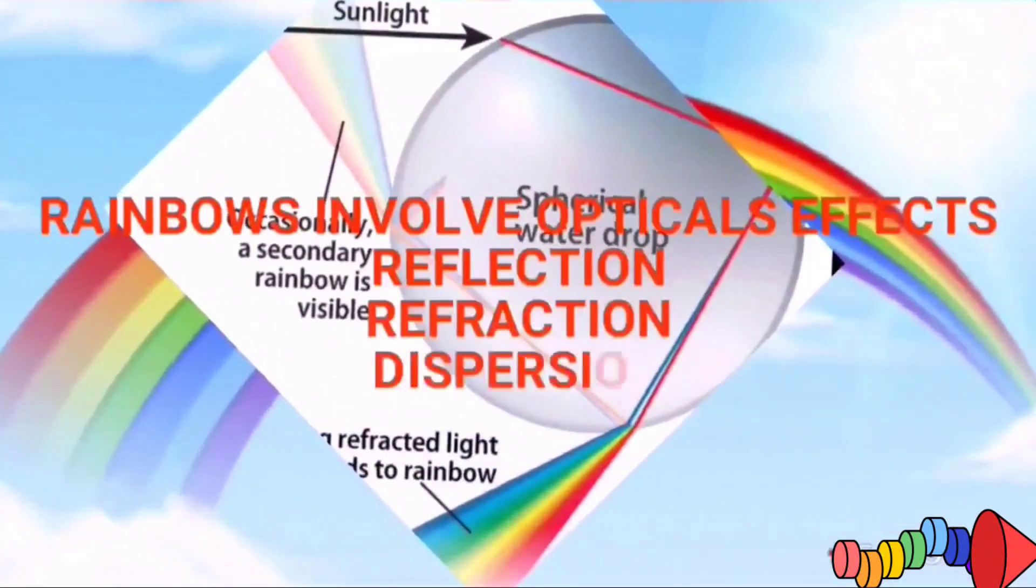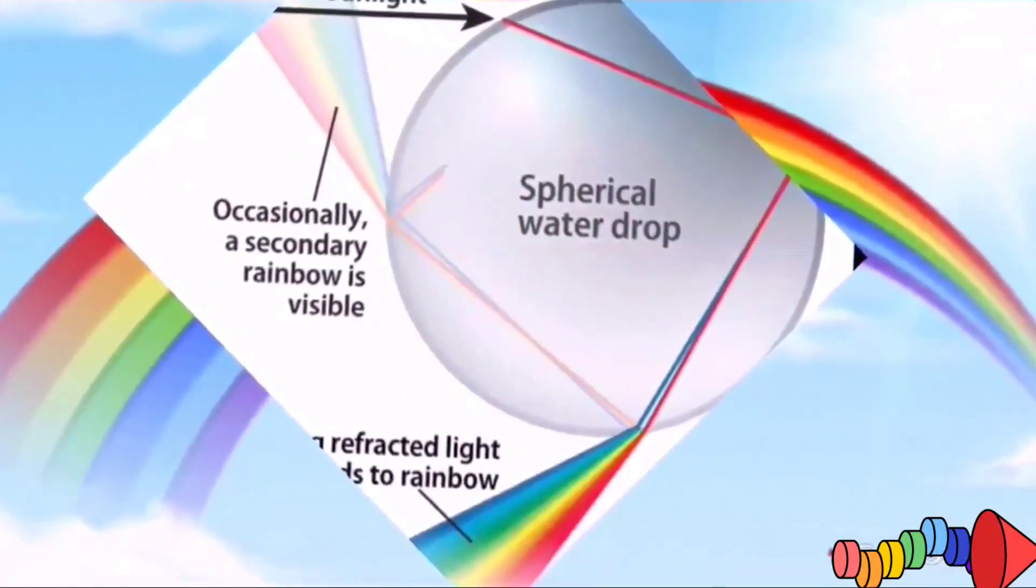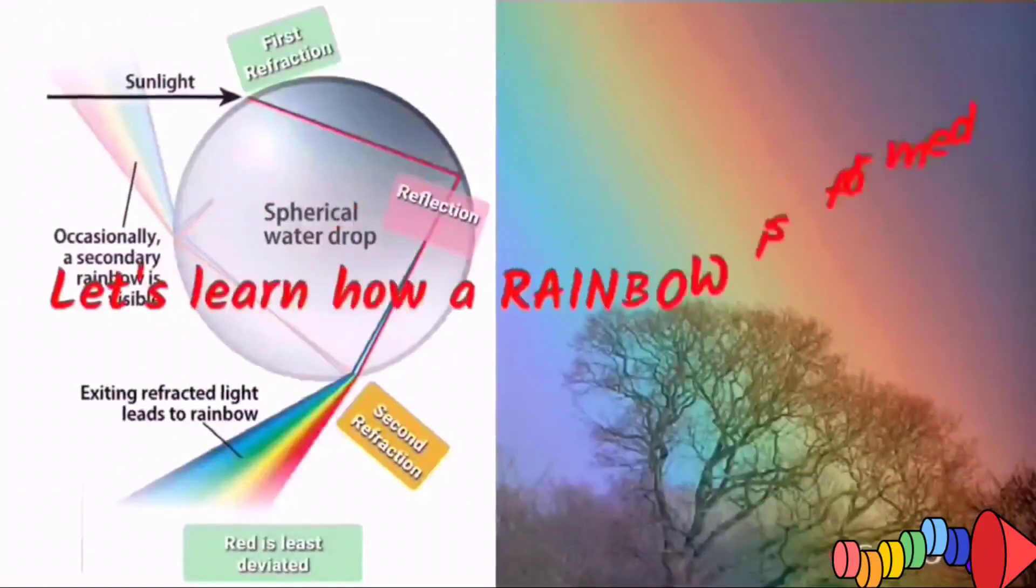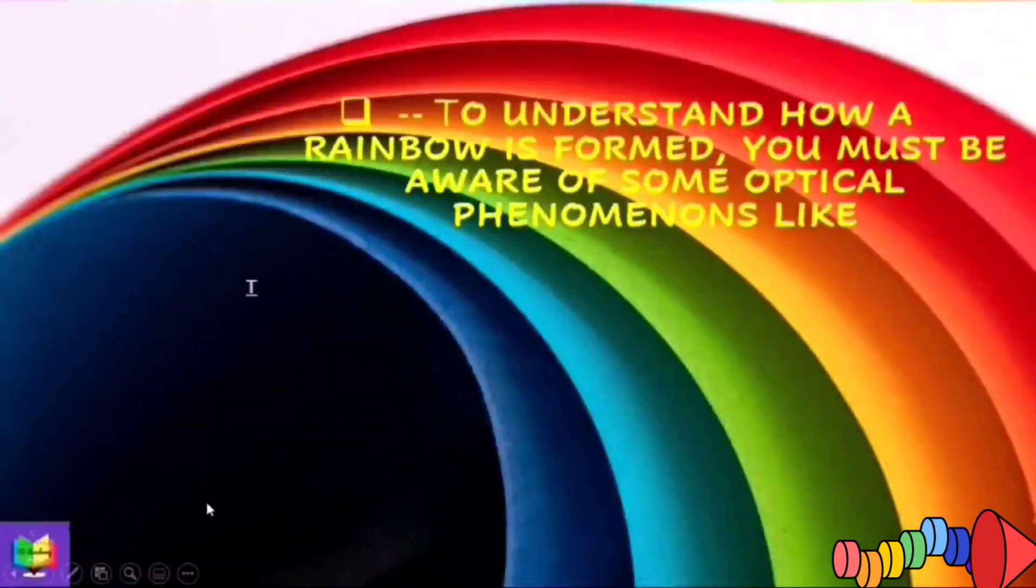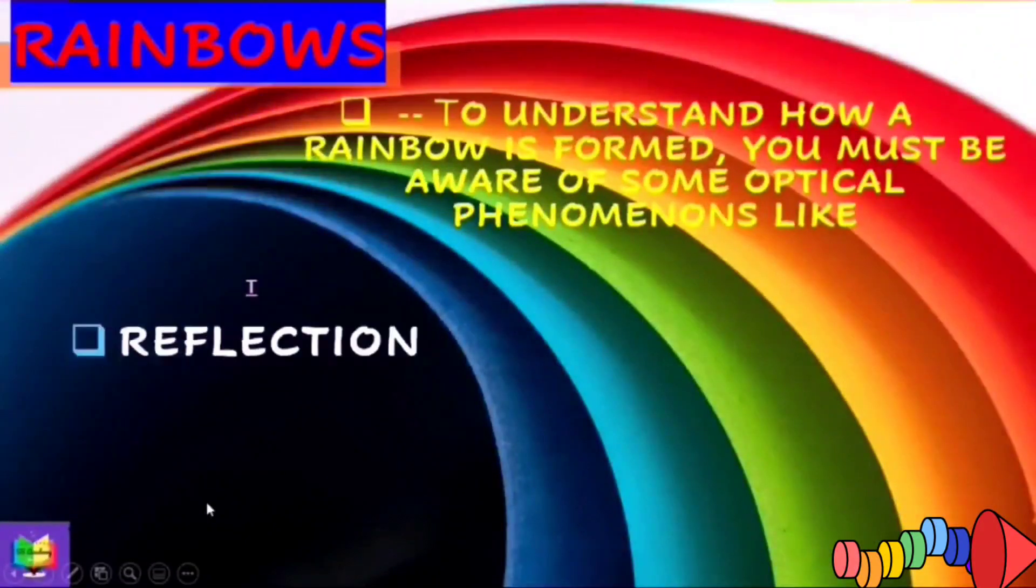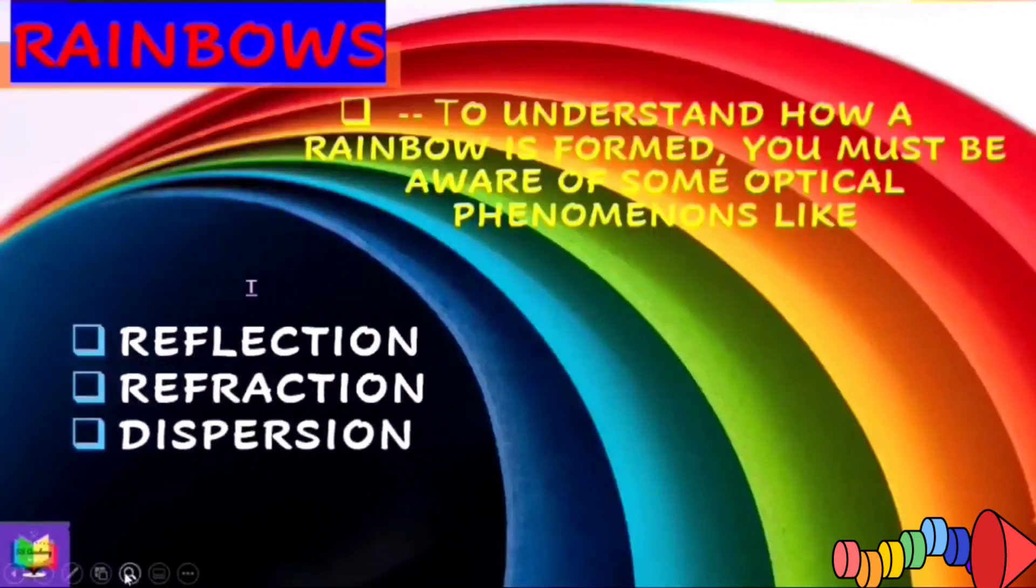These water droplets act as prisms and hence white light is separated into seven colors. Now let's see how a rainbow is formed. In order to understand how a rainbow is formed, you must be aware of some optical phenomena like reflection, refraction and dispersion.